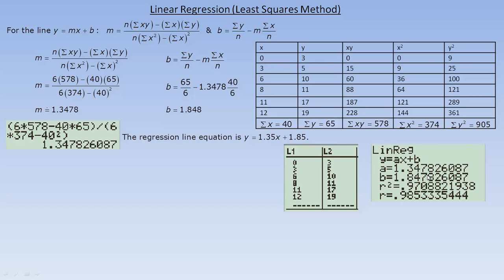Notice my a value is 1.34782, et cetera. Same thing I got here. And b is 1.8478. To three decimal places, 8, 4, 8. Same thing I got right here. It also gives the r squared and r values. I am going to show how to find those as well.